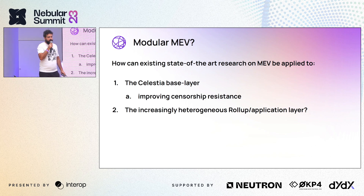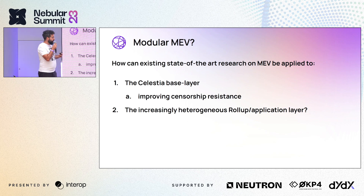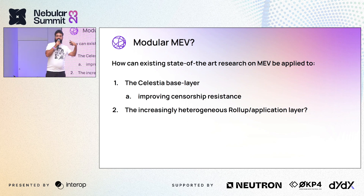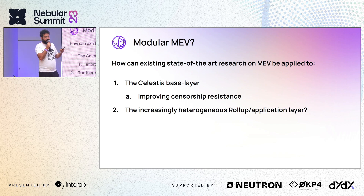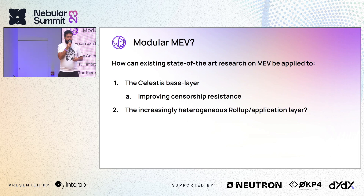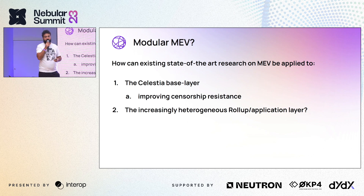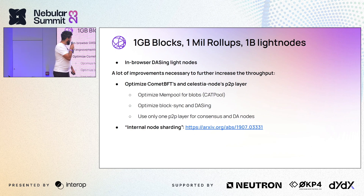Another hot topic we need to tackle is MEV. There's a lot of research going on. In the modular paradigm there are more nuances because you have a heterogeneous app layer on top — there's MEV in the rollups and MEV in the base layer. Skip and other projects are looking into how to reason about state-of-the-art MEV research in this context. It's a very interesting research field, and I'd recommend looking into the early Celestia ecosystem for tackling MEV and improving censorship resistance, since rollups inherit the censorship resistance of the base layer.